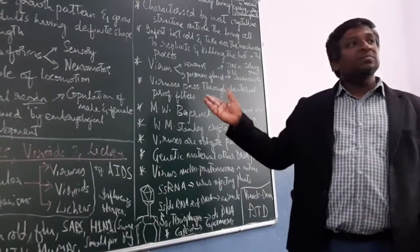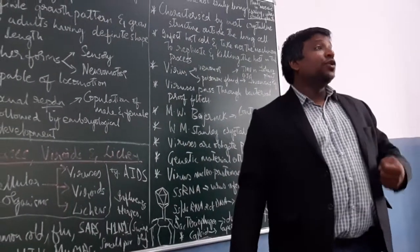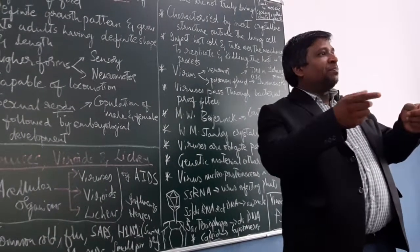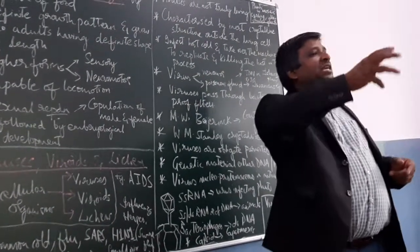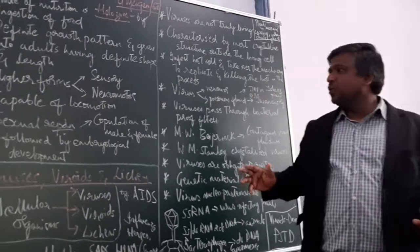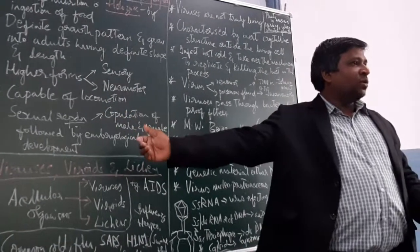Higher forms of animals have sensory structures and neuromotor structures. We are all listening, the concepts are going to your brain and you are interpreting them. So neuromotor is functioning. They are capable of locomotion.